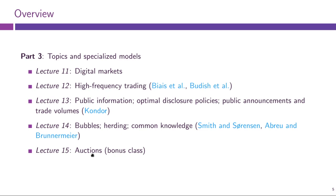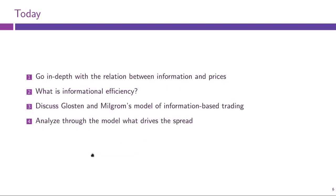So let us begin with part one of this schedule. Today we will be talking about the relation between information and prices — in particular, how information is reflected in prices, what is informational efficiency, and we will introduce our first model which explores these issues. This will be Glosten-Milgram's model of information-based trading, and this will be our first model through which we will explore the bid-ask spread.